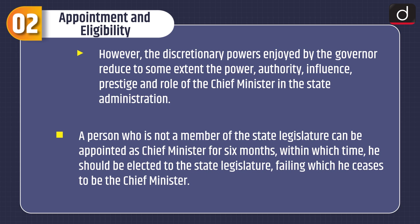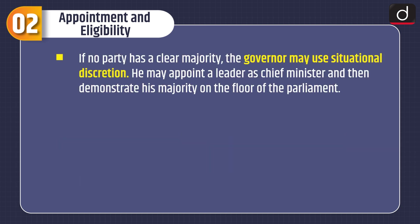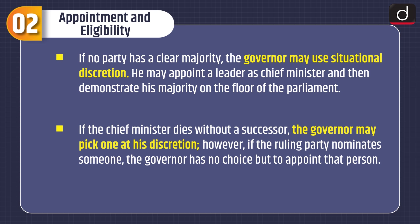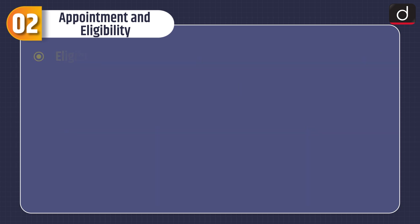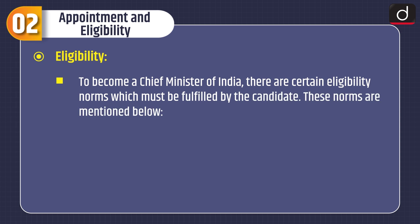A person who is not a member of the state legislature can be appointed as Chief Minister for six months, within which time he should be elected to the state legislature, following which he ceases to be the Chief Minister. If no party has a clear majority, the Governor may use situational discretion — he may appoint a leader as Chief Minister and then ask him to demonstrate his majority on the floor of the house. If the Chief Minister dies without a successor, the Governor may pick one at his discretion. However, if the ruling party nominates someone, the Governor has no choice but to appoint that person.